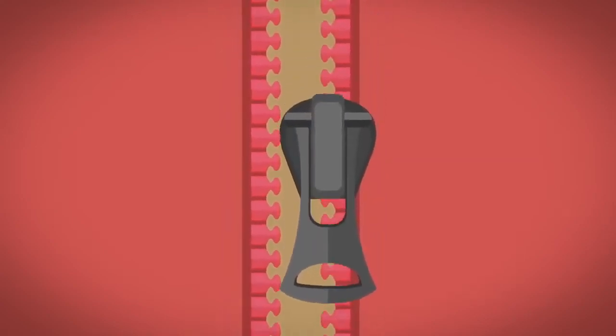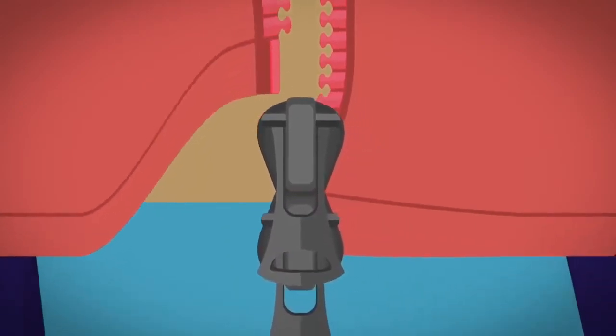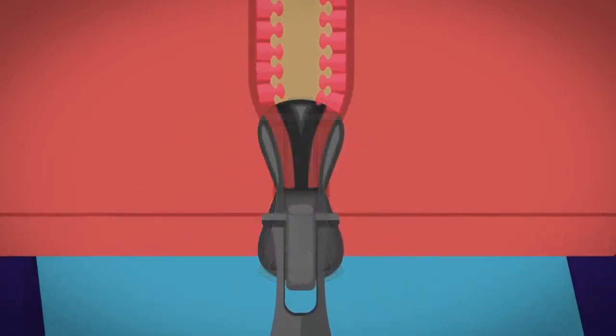To close the zip the slider is pulled down to the bottom and the pin is inside it. Inside the slider there are two bits called wedges with grooves in them. One wedge is higher than the other.